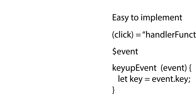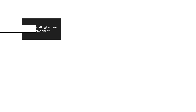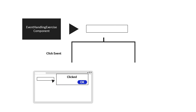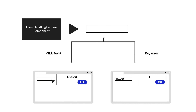Now I want you to do this exercise. Create a component called Event Handling Exercise. Inside the component is an input element. When you click on the input element, it will display an alert that reads 'clicked'. When you type on it, it will keep track of how many times the keyup event gets triggered. When you press five keys, it will display an alert that prints the key you pressed on the fifth attempt. Lastly, include the component in the application. Pause the video and take a few minutes to do this exercise.